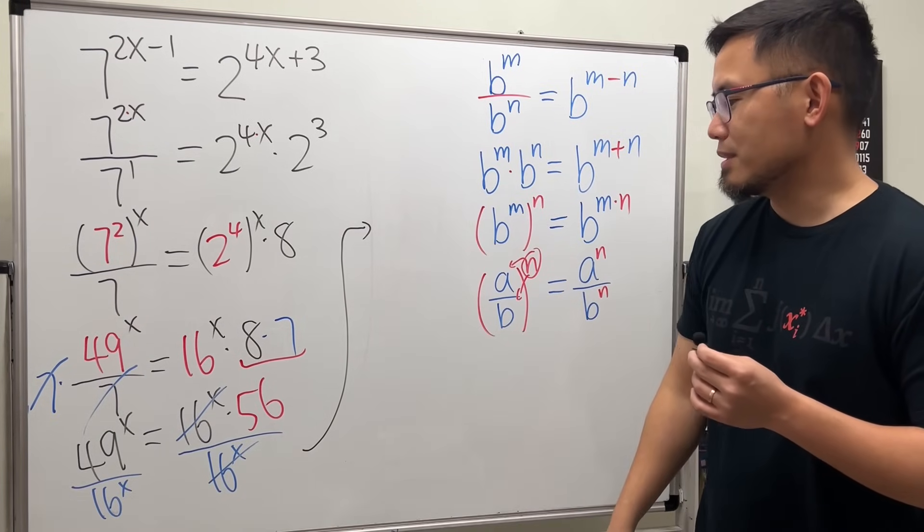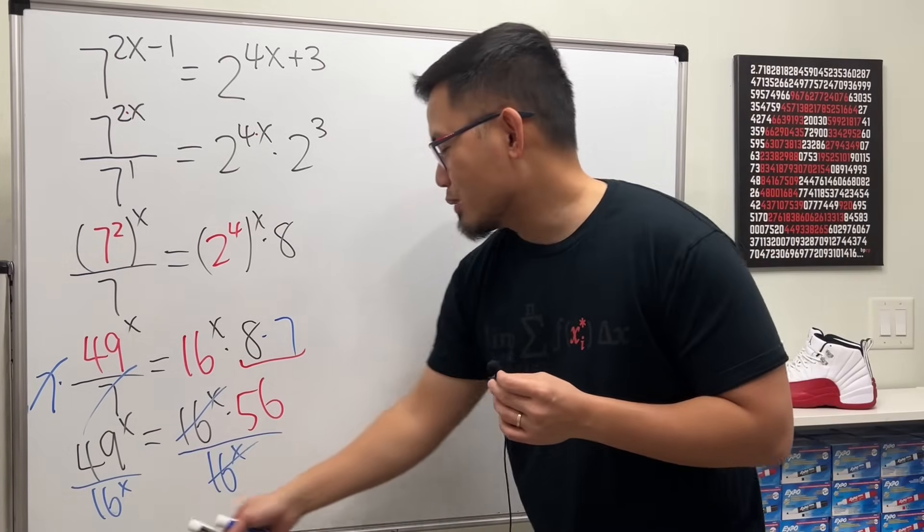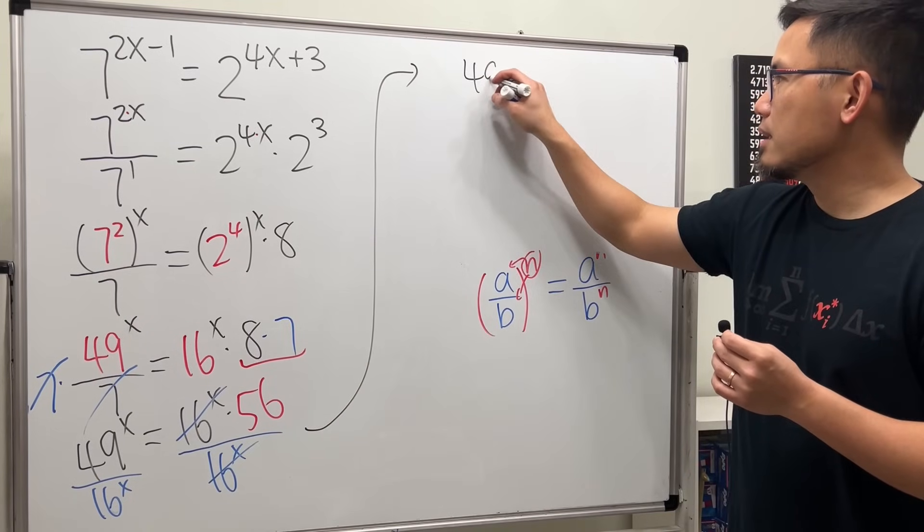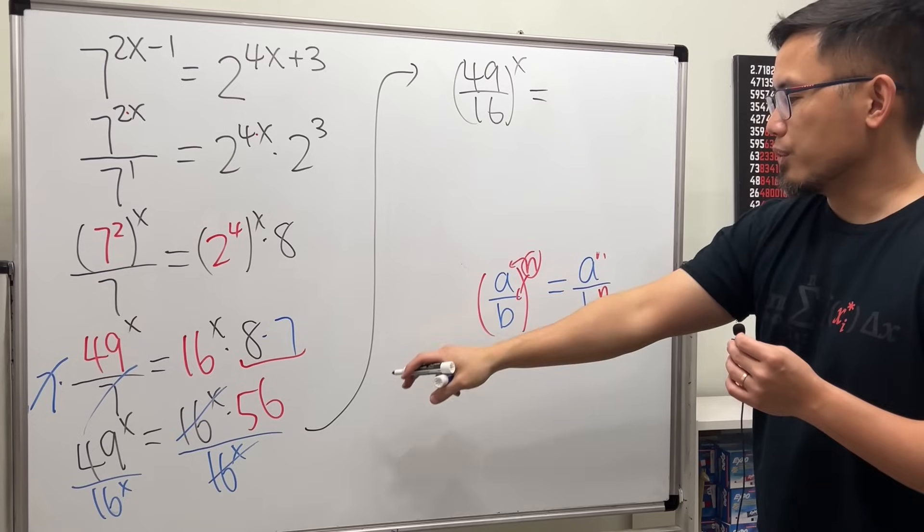So I'm going to put this down as 49. I really don't have no space. Okay, I really had to erase the board. But anyway, though, this right here gives us 49 over 16, and then raised to the x power. And that is equal to 56.